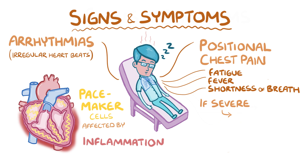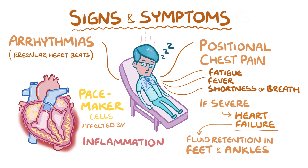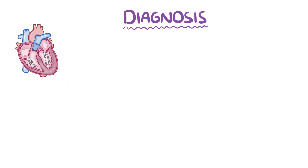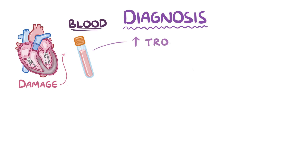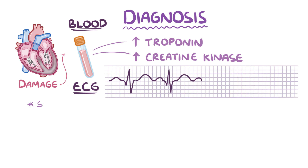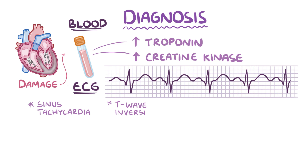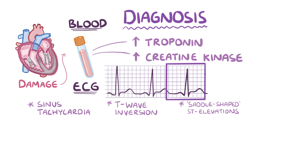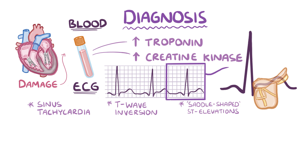In severe cases when myocarditis develops into heart failure, there can be additional symptoms like fluid retention in the feet and ankles. Heart muscle damage causes troponin and creatine kinase levels to rise on blood tests. An electrocardiogram can show sinus tachycardia, a fast heart rate, as well as T wave inversions and saddle-shaped ST segment elevations — because it looks a bit like a horse saddle.